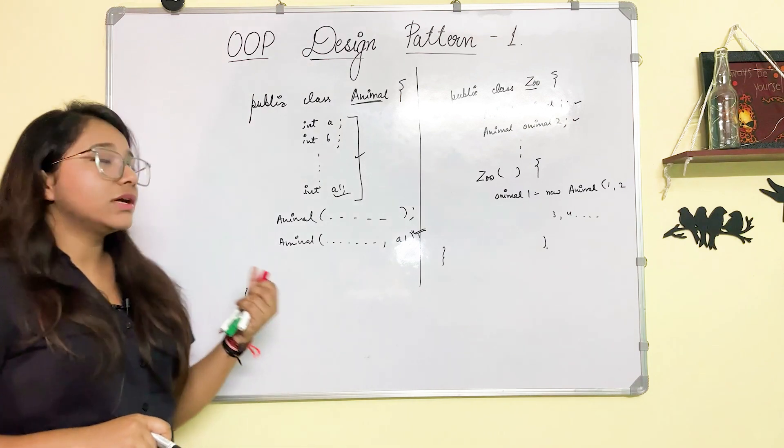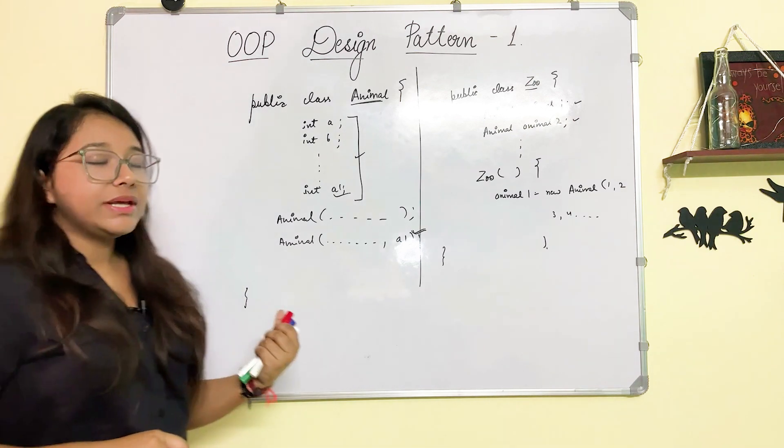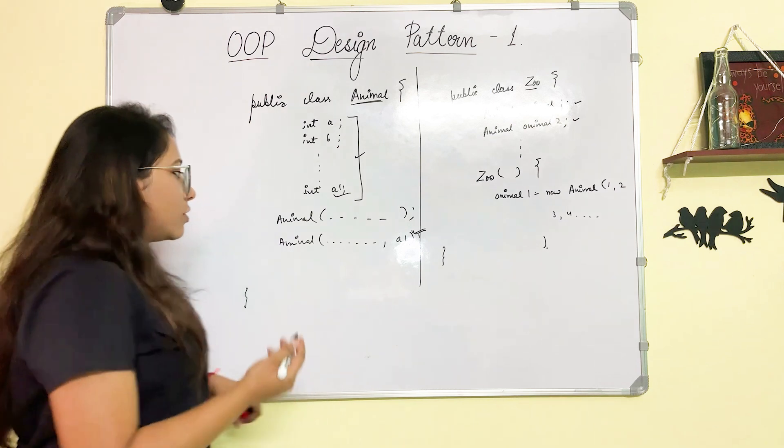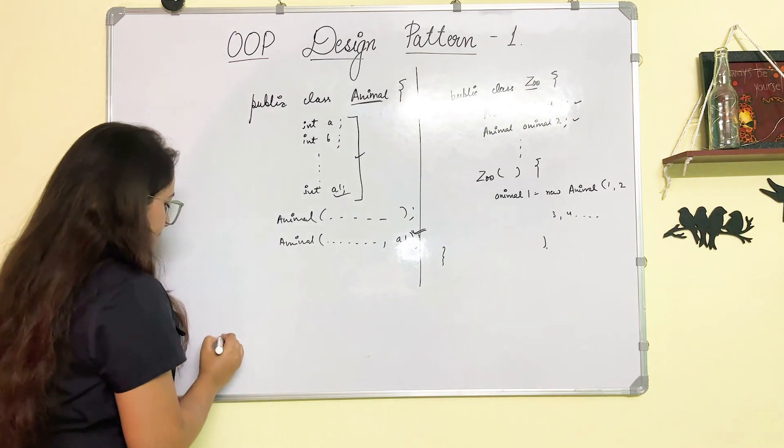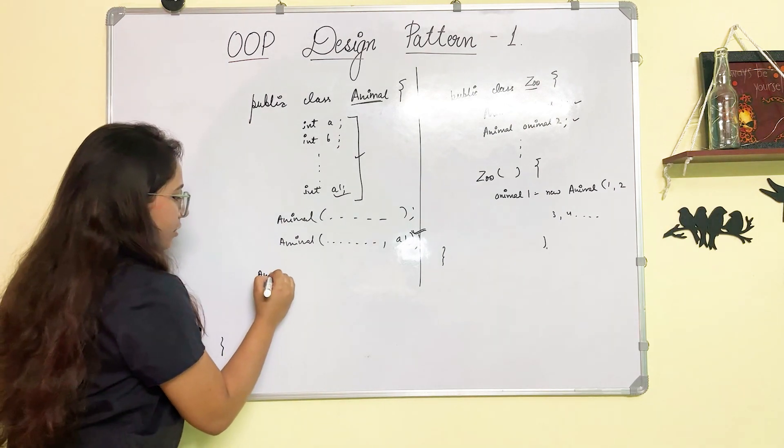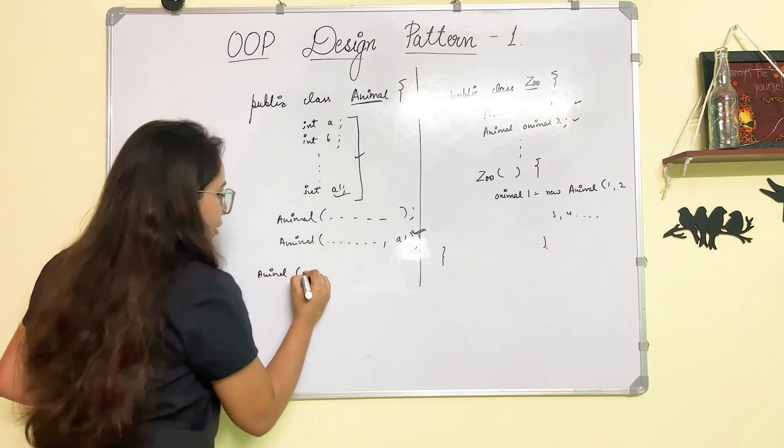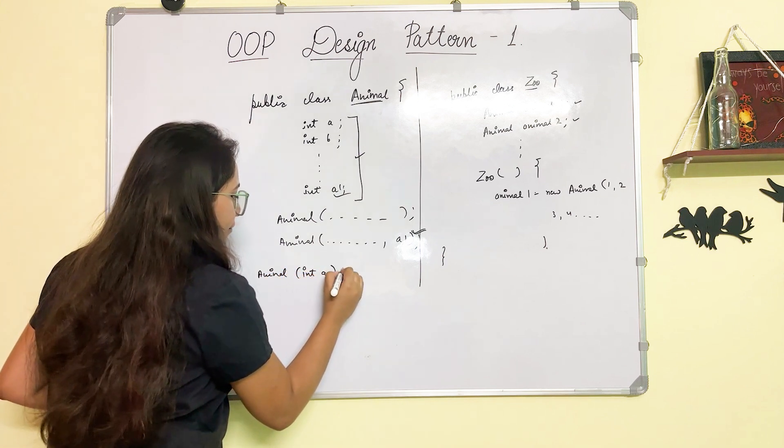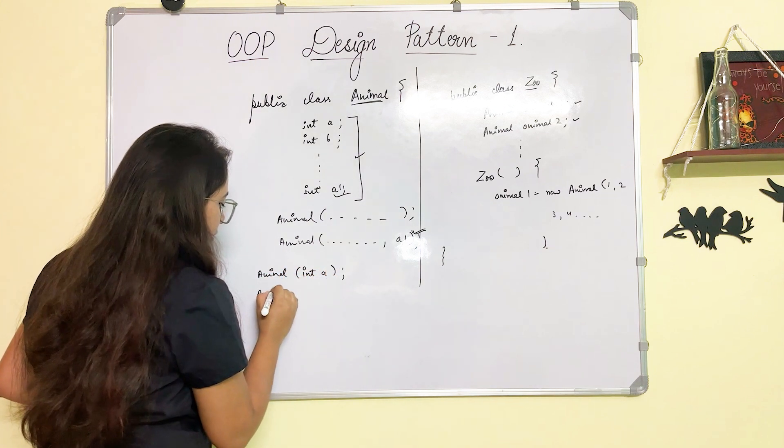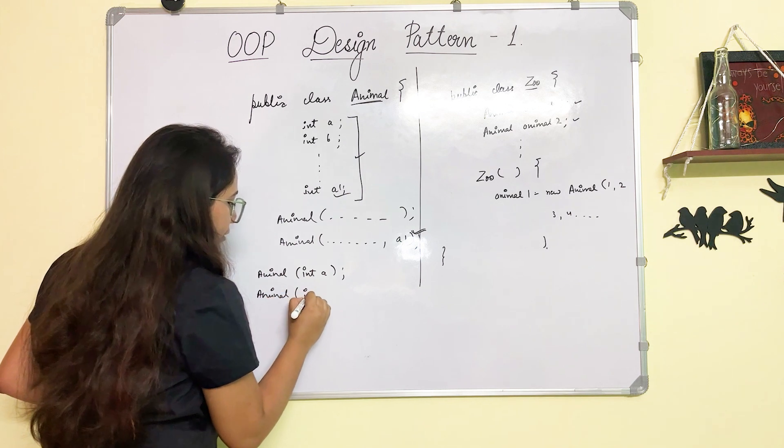And also, you have to have a lot of constructor overloading. Because in constructors, let's say if I have two constructors: Animal int A and Animal int B.